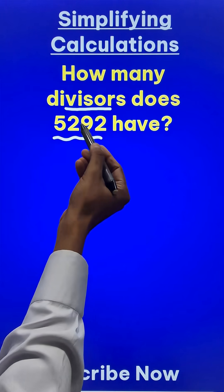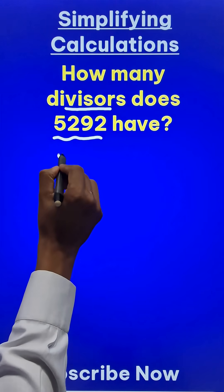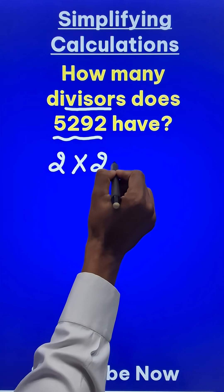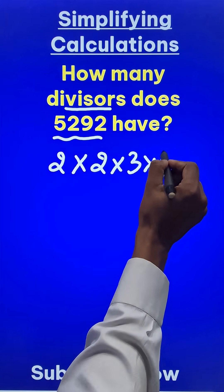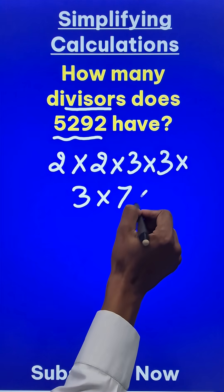So, we start making the prime factors of this number and you will see that the prime factors of this number are 2 times 2 times 3 times 3 times 3 times 7 times 7.